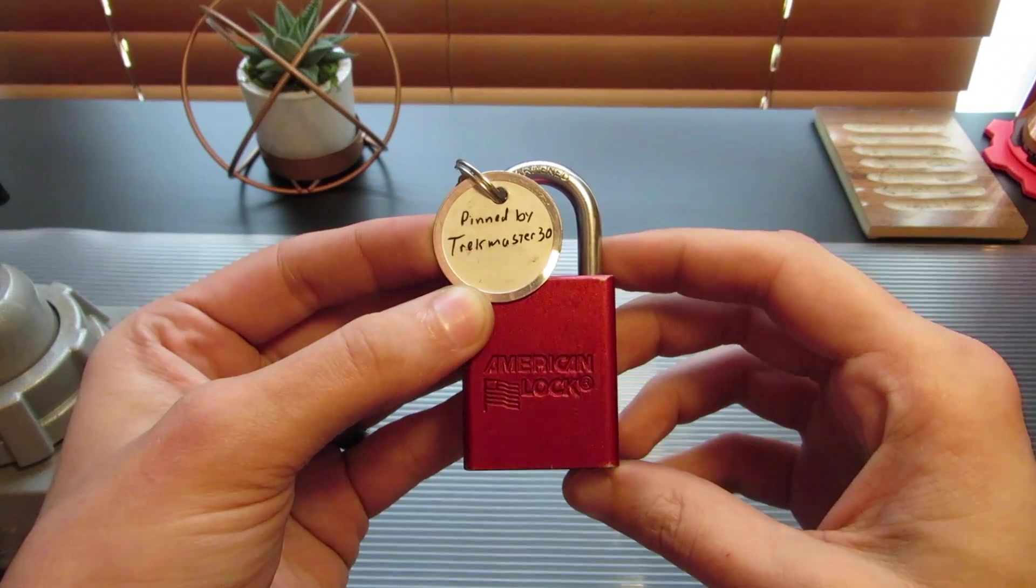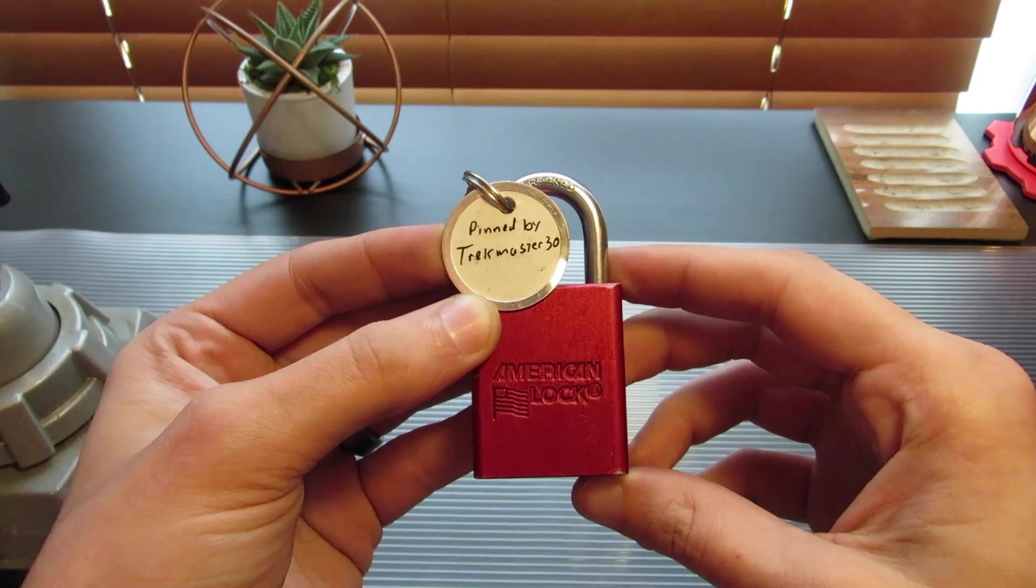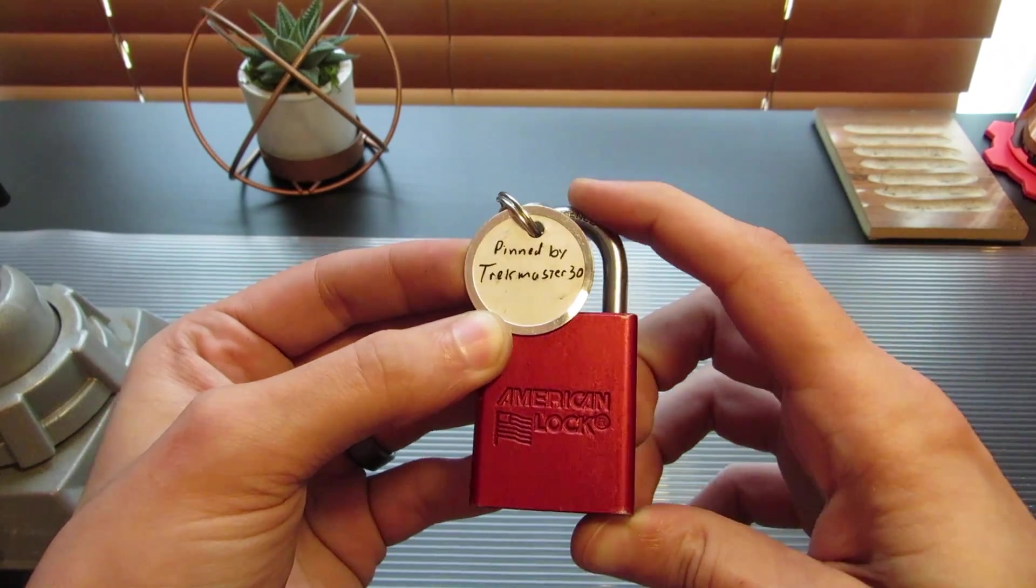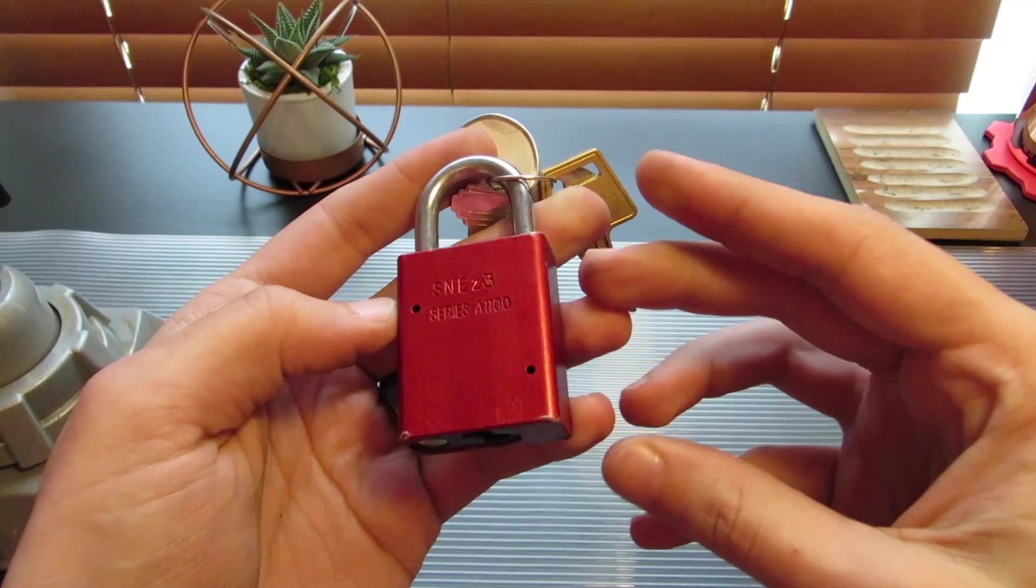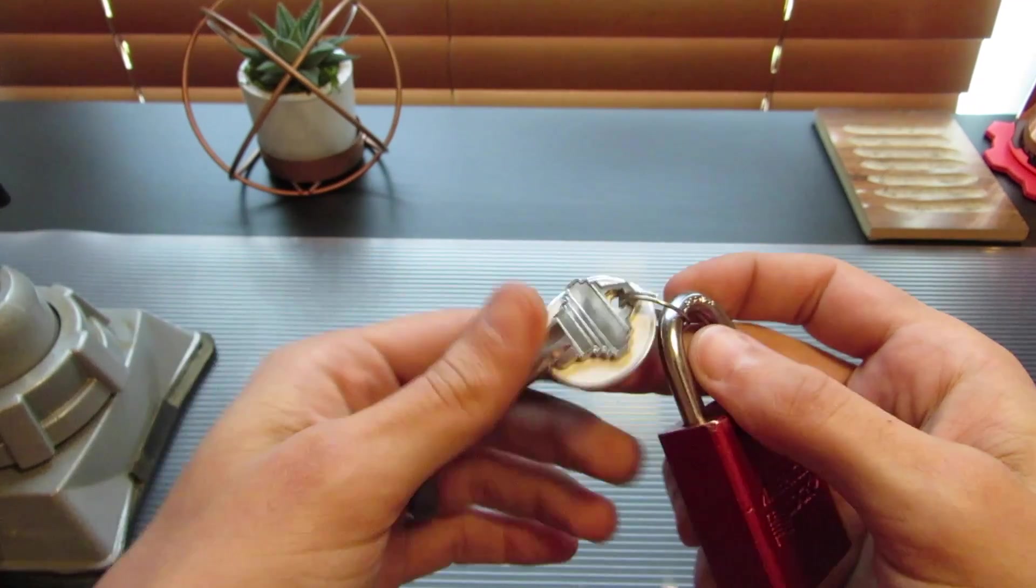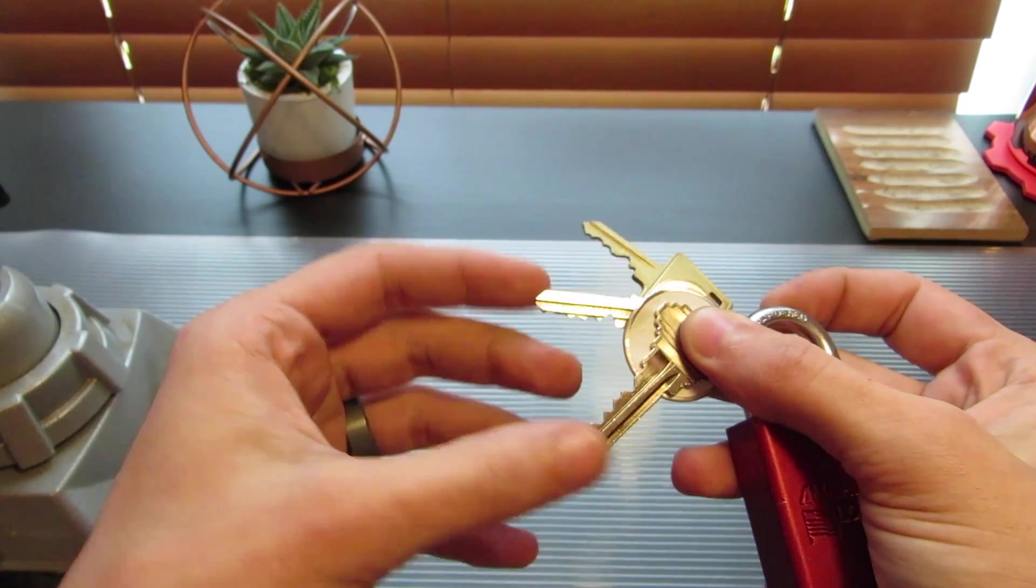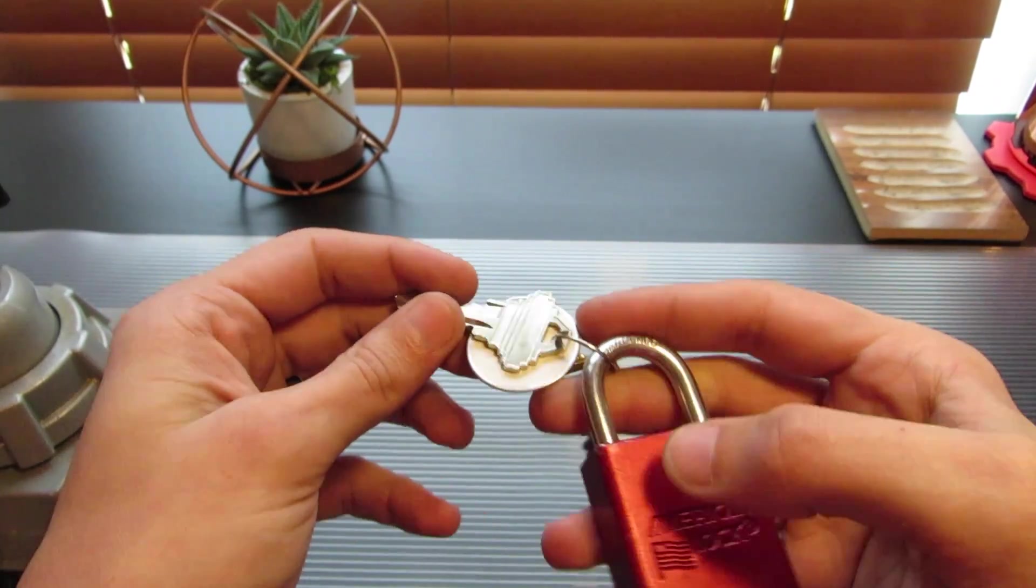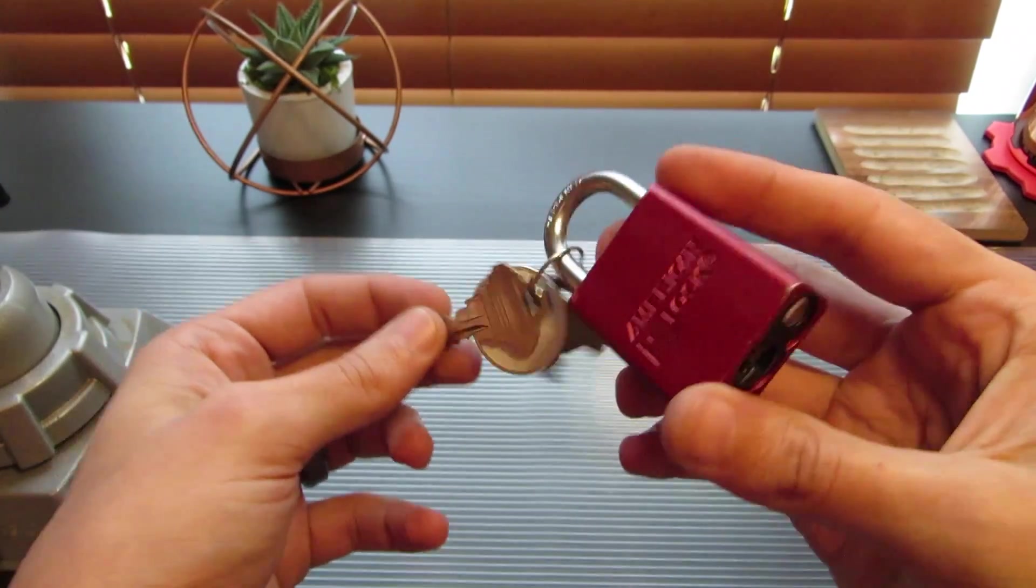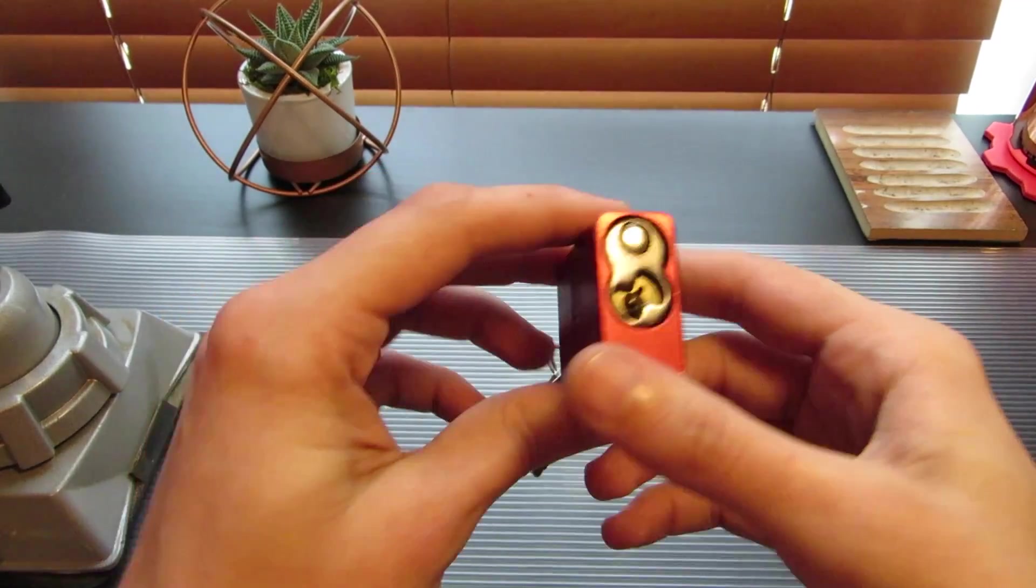Hey guys, so I think I'm gonna start with this American challenge lock by Trekmaster30, the 1100 series, because it's got a bunch of extra keys that aren't for this one that go to some of the other locks. So I think that's a sign that we're supposed to pick this one first here.